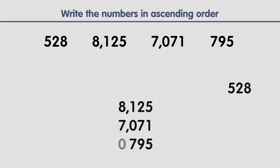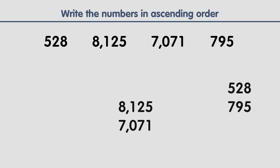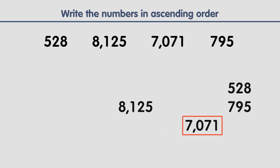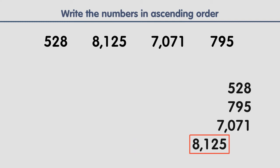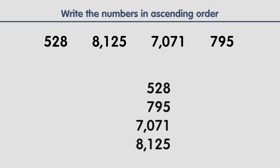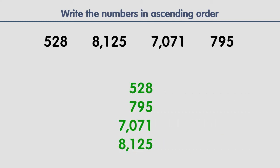We do the same with the remaining numbers. The smallest digit in the first column is zero, so this is the next number in order. Seven is less than eight, so the next number follows. The last number left is the largest number. And this is how we order numbers in ascending order, from smallest to largest.